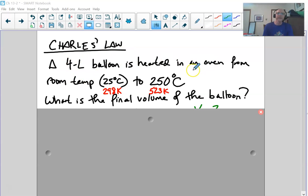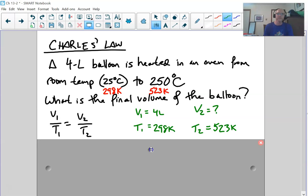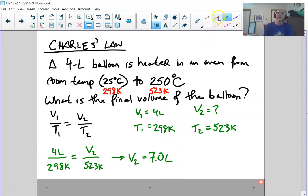If you take a 4-liter balloon and you heat it up in your oven from room temperature to about 500 degrees Kelvin, notice you've got to convert those temperatures to Kelvin. What's the final volume of this original 4-liter balloon if we heat it up from 298 to 523 K? We're going to use V1 over T1 equals V2 over T2. Write down your variables, substitute in and solve. The answer is it almost doubles in size, and that's because the temperature almost doubles.